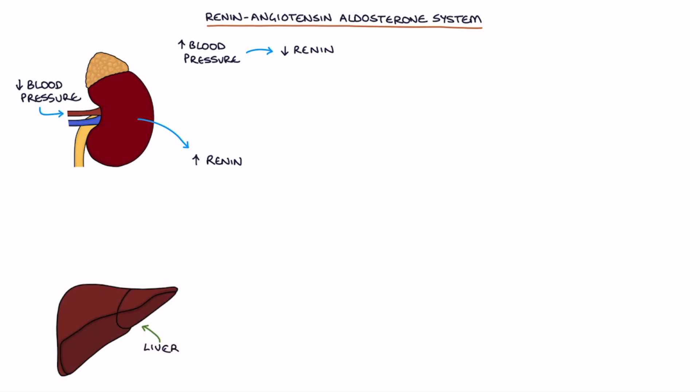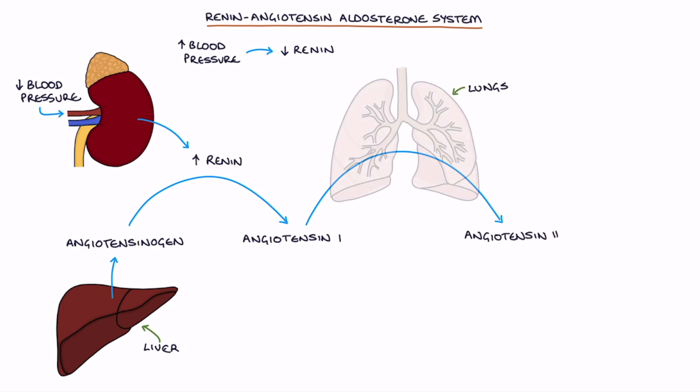The liver produces a protein called angiotensinogen. Renin acts to convert angiotensinogen into angiotensin 1. Angiotensin 1 converts to angiotensin 2 in the lungs with the help of angiotensin converting enzyme or ACE.